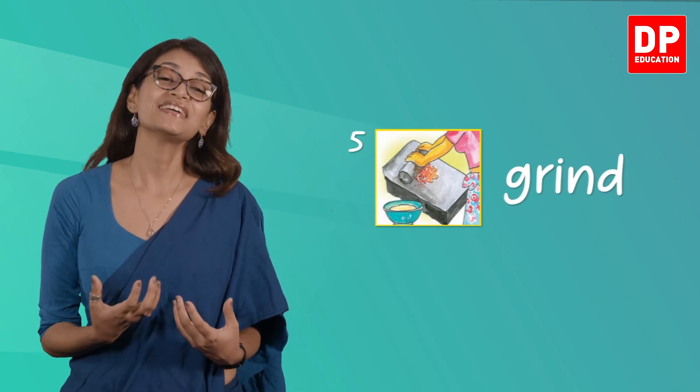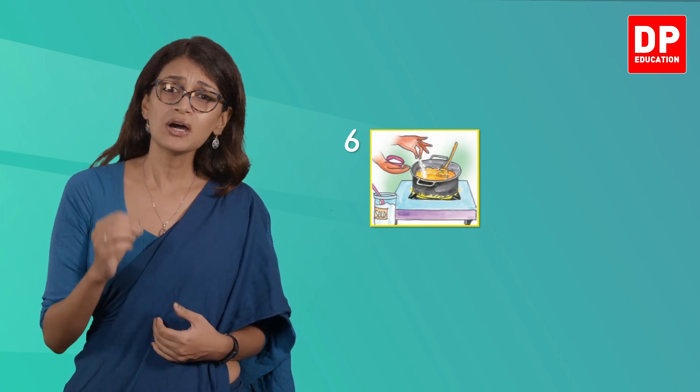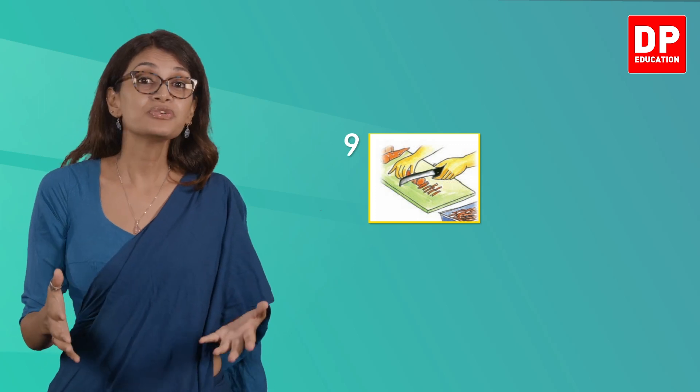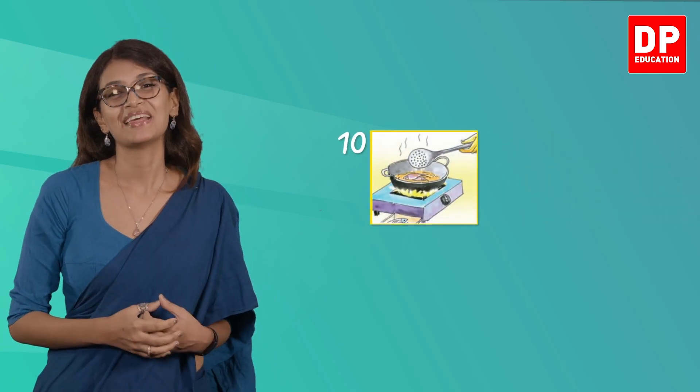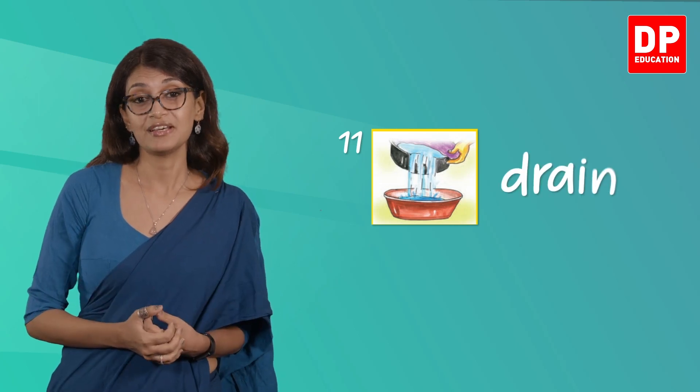Picture five shows a grinding stone, so the verb is 'grind.' Picture six shows someone adding flavour — most probably salt — into the pan of food, so the verb is 'add.' Picture seven shows a coconut being scraped, so the verb is 'scrape.' Picture eight shows someone preparing something using flour; this action where you mix flour with water is known as 'kneading.' Picture nine shows someone cutting up a carrot that is being diced. Picture ten shows a pan with sizzling oil — the action is 'fry.' Picture eleven shows water being drained, so the verb is 'drain.'